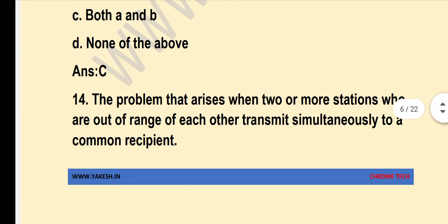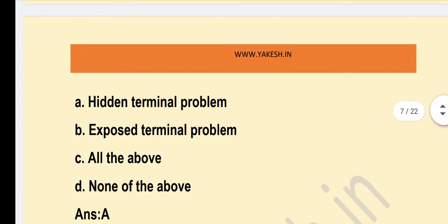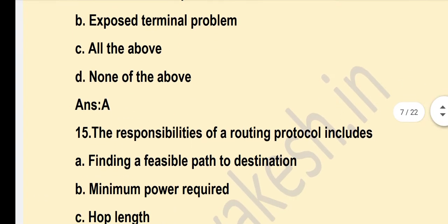Next question: The problem that arises when two or more stations that are out of range of each other transmit simultaneously to a common node? Option A — Hidden Terminal Problem — is the correct answer.